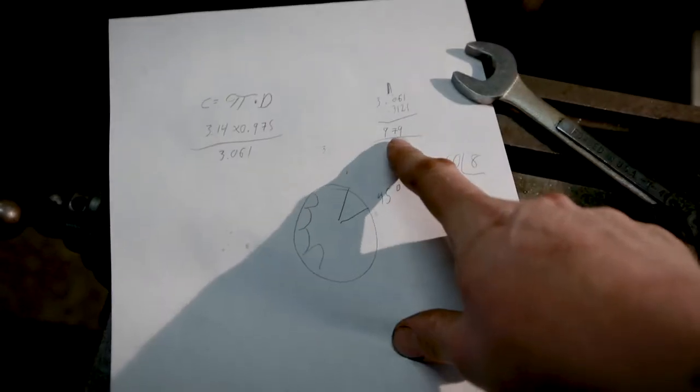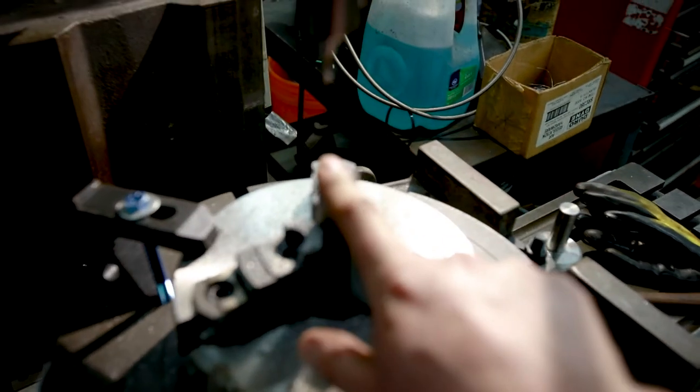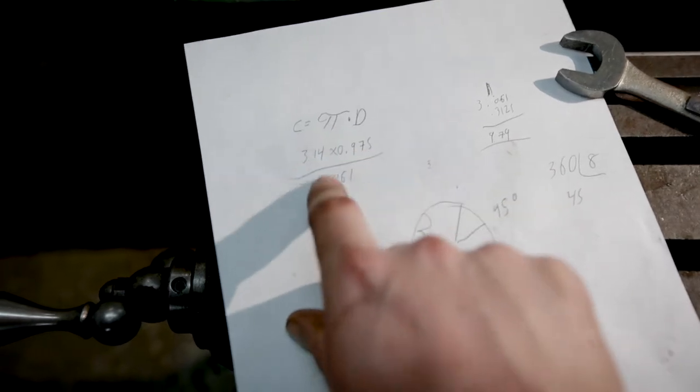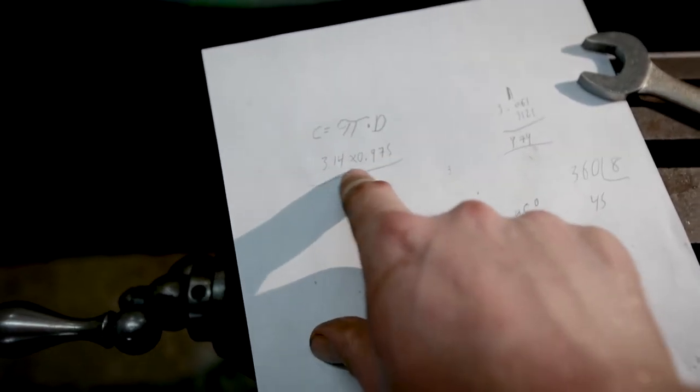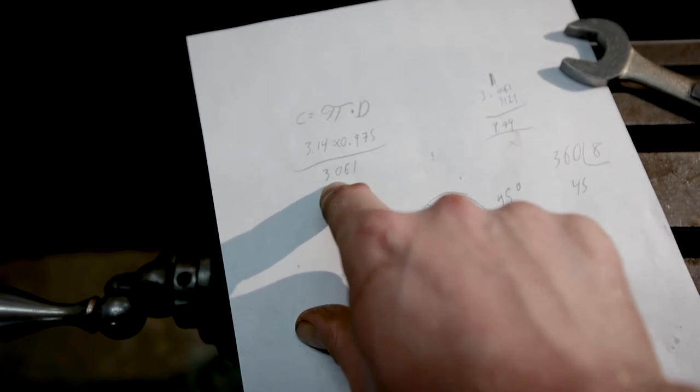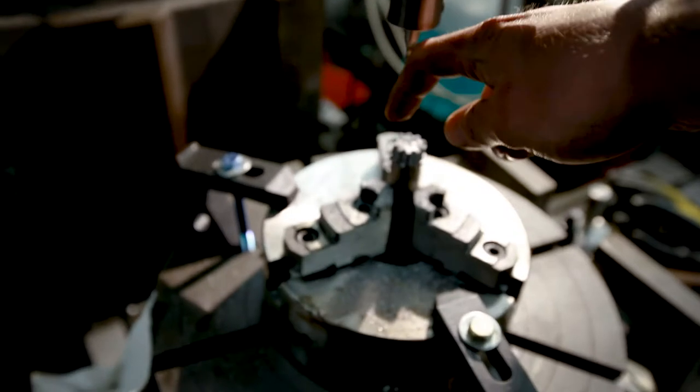Originally, I was going to do this with nine splines. I ended up rounding up to 10. So basically, if you want to figure out how many teeth you can put on a shaft like this, what you can do is take and find the circumference, which is pi times diameter, which in this case is 3.14 times 0.975, which leads me with 3.061 as the circumference of this piece of bar stock.